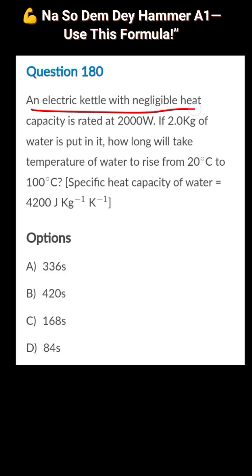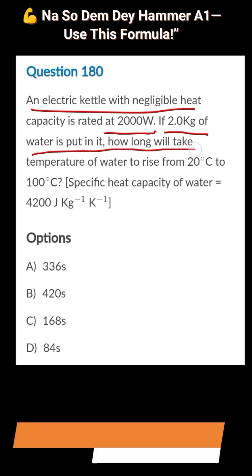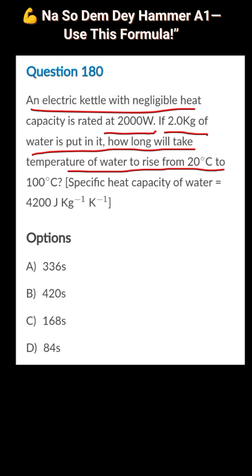An electric kettle with negligible heat capacity is rated at 2000 watts. If two kilograms of water is put into it, how long will it take the temperature of the water to rise from 20 degrees C to 100 degrees C?